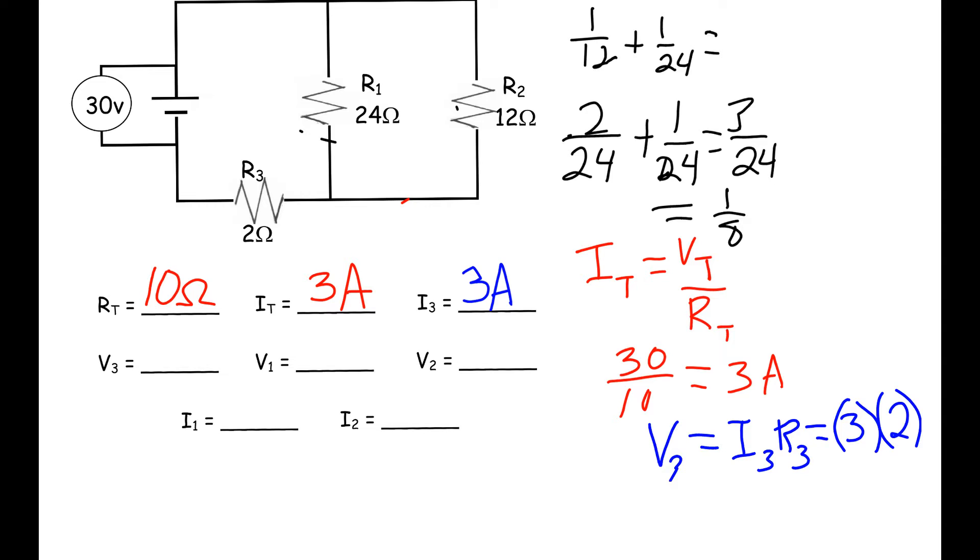Because we have R3, our I3 is equal to 3, which is what we put here. And then R3 is equal to 2, which is what we put here. That's going to give us a total of 6 volts. So we have 6 volts for R3, and we have 30 volts for our total.